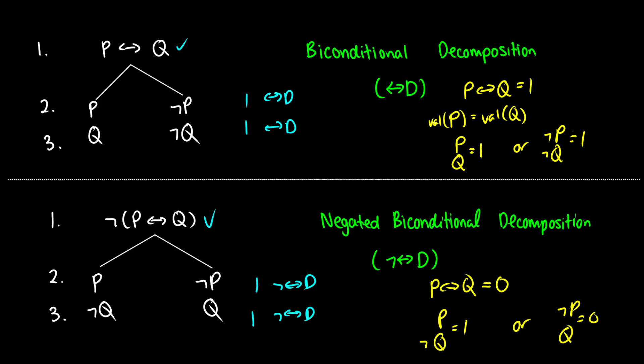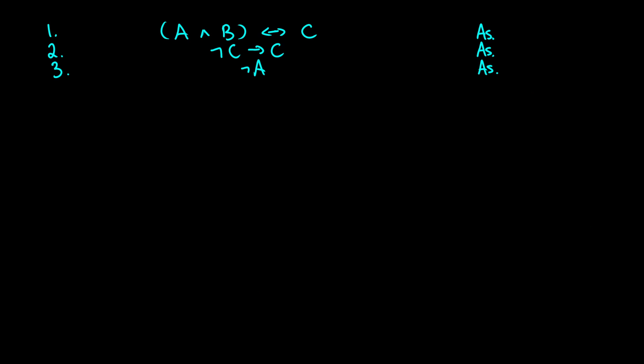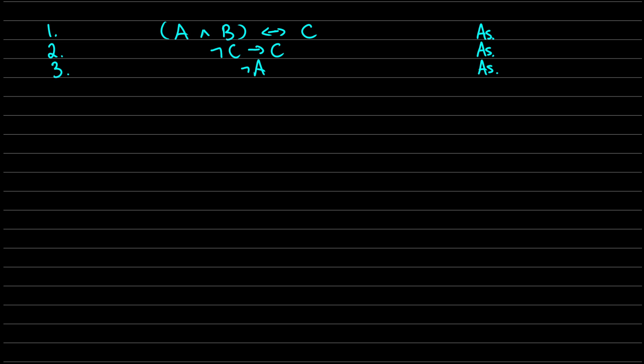So those are all the rules we have for the conditional and the biconditional. Now let's see how these are used in a truth tree. Because we're doing a truth tree, let's put in a line so everything looks nice and tidy. With conditionals and biconditionals, we always get branching paths, so it doesn't really matter which one we pick first. I'm going to pick the first one — the biconditional — to deal with first.